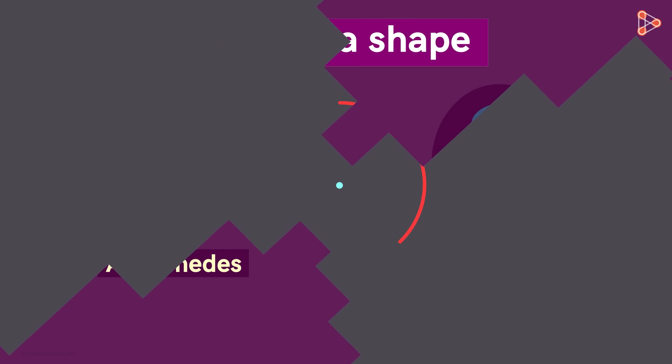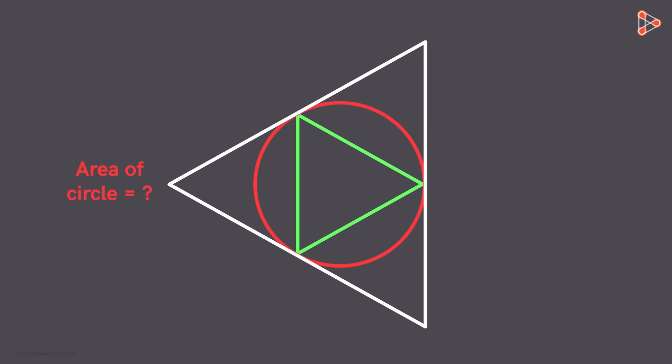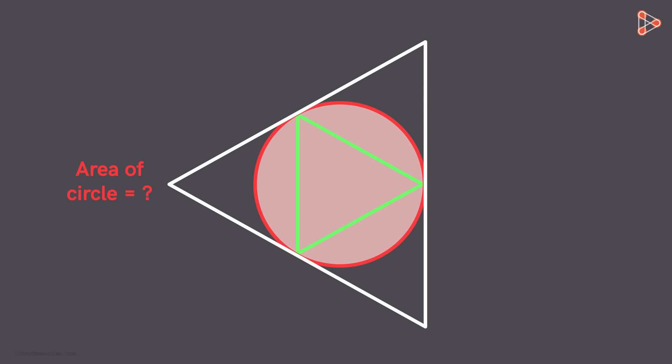Consider this circle with radius r. How would you find its area? Consider these two triangles. One circumscribed around the circle and the other inscribed inside it. We can say that the area of the circle will be between the areas of these two triangles.